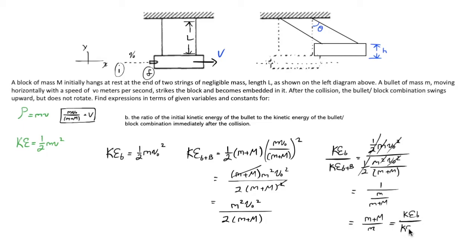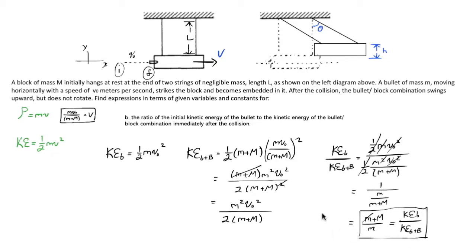That's a surprisingly elegant result — it contains no velocity terms, only the relative masses. Since the bullet's mass is very small, this ratio is quite large, essentially equivalent to M/m, representing how much more kinetic energy is stored in the bullet alone than in the slower-moving bullet-block combo. And because this ratio is not equal to one, kinetic energy is not conserved — confirming this is an inelastic collision, as expected when objects stick together.